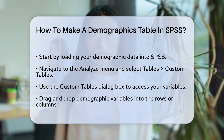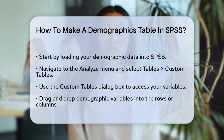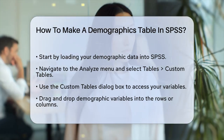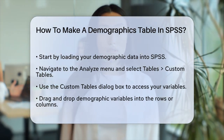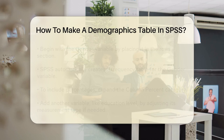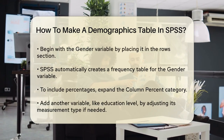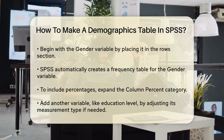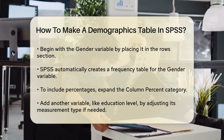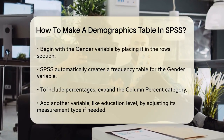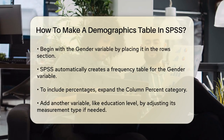In the Custom Tables dialog box, you'll see a list of your variables. Here, you can drag and drop variables into the rows or columns of your table. For example, if you want to analyze demographic variables like gender, age, and education level, you can drag these variables into the rows or columns as needed.